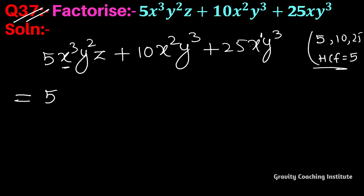x के least power 1 है तो x common होगा। y भी तीनों ही टर्म में है और y के least power 2 है तो y² common होगा। z तीनों ही टर्म में नहीं है तो z common नहीं हो सकता। तो first वाले टर्म में हमने 5xy² common लिया है तो x³ में से x common लिया तो x² होगा और y² common है, z बचेगा।